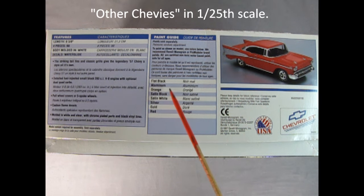It's got flat black paint, aluminum, orange, satin, black, satin white, silver, gold and red. Those are the colors we need to paint it.